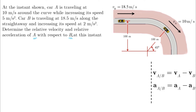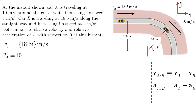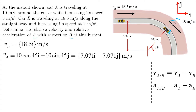We want V_A relative to B and A_A relative to B. Here is our unit vector coordinate system. We start with the velocity of B, which is 18.5 in the positive I direction. V_A is going to be 10 cosine 45 degrees in the I direction. Note that both angles will be 45 degrees, so it doesn't matter if you take the cosine or the sine — they all lead to the same number.